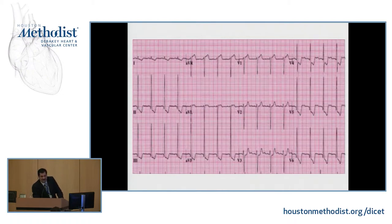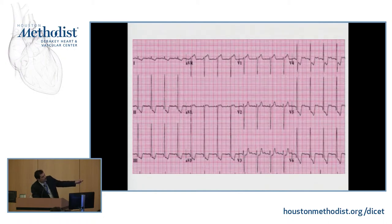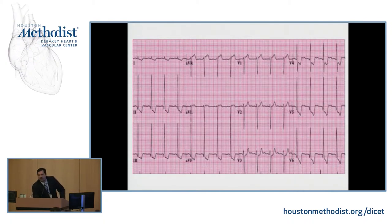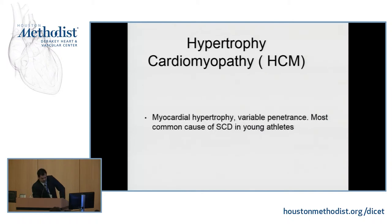This is another EKG pattern where you have to think about cardiac arrest. When you see significant findings of left ventricular hypertrophy — voltage criteria for LVH, deep T-wave inversions as non-voltage criteria, and left atrial enlargement — these are all suggestive of hypertrophy. If there's no history of hypertension, you have to think of hypertrophic cardiomyopathy. Hypertrophic cardiomyopathy has variable penetrance and is the most common cause of sudden cardiac death in young athletes. When you screen young athletes and see this type of abnormality on EKG, ring the bell for further testing.